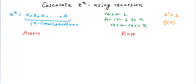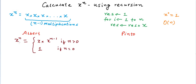Albert and Pinto are two students who have been given the assignment to calculate x to the power n using recursion, and they come up with two different solutions. Albert says that x to the power n can be written as x into x to the power n minus 1, for all n greater than 0. For n equals 0, x to the power 0 is simply 1. This is his recurrence relation, with the second condition being the base case.